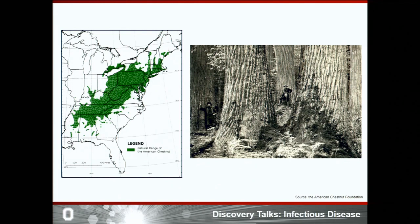They used the wood for buildings and furniture and the chestnut for food. However, in 1905, a fungus causing the disease chestnut blight was first introduced and detected in New York City's Bronx Zoo. It was introduced from Asia.